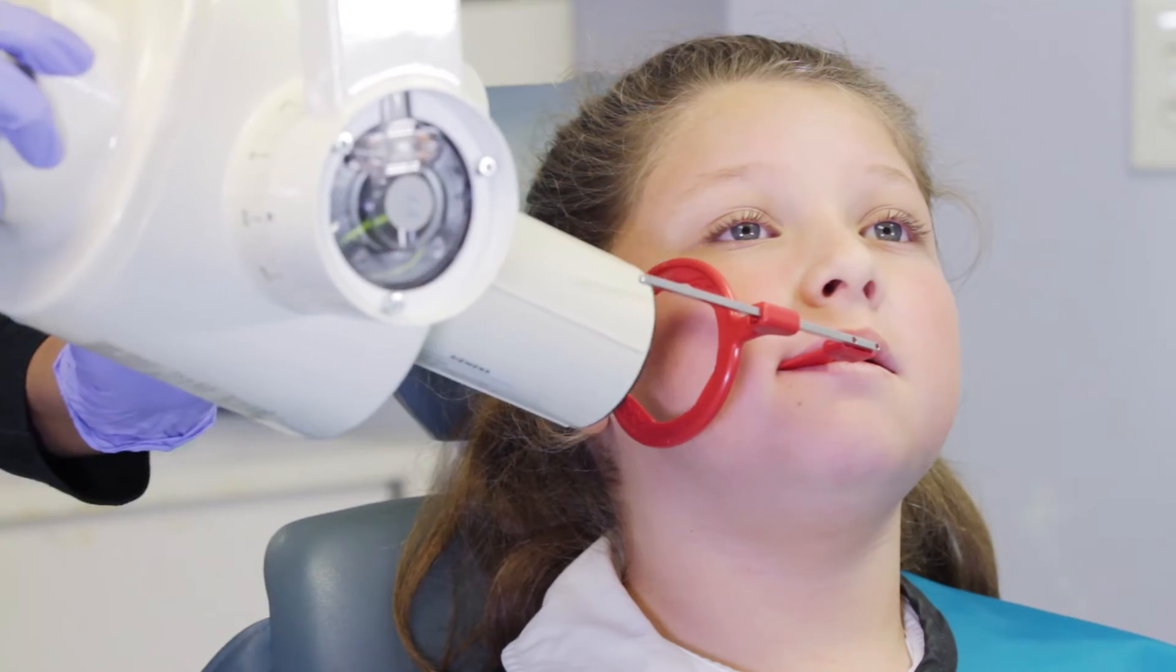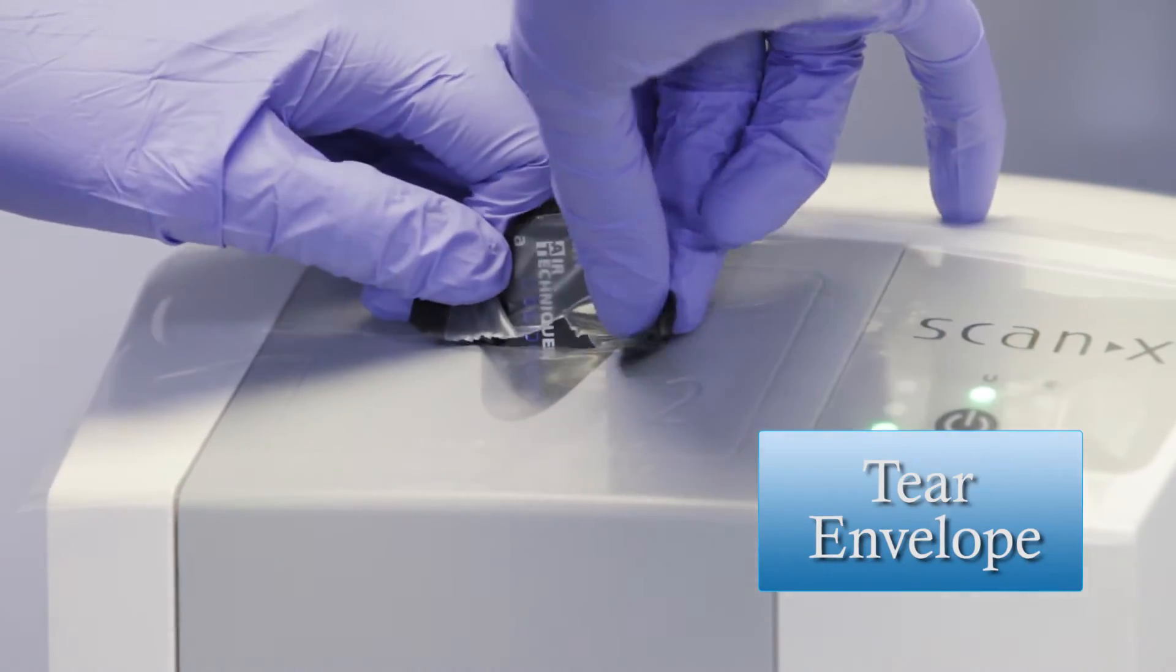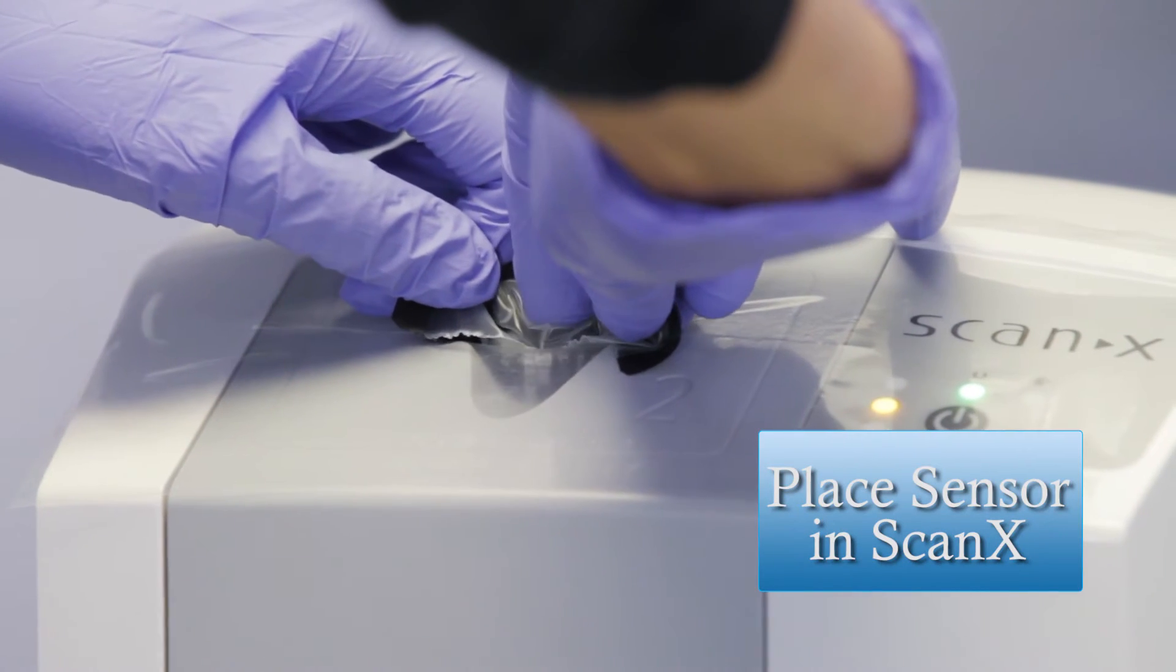Position the patient's head and take the x-ray. Once the x-ray is complete, tear the bottom of the barrier envelope to remove the PSP and place it into the opening.